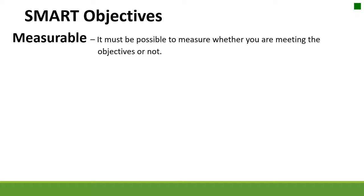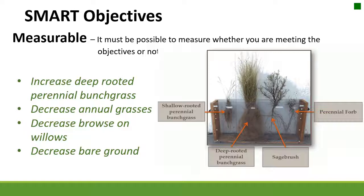M in SMART refers to measurable. We want to make sure our objectives are measurable and can help us understand whether we're moving in the right direction. When thinking about plants, we talk about them in functional groups. For example, deep-rooted perennial bunch grasses are great competitors with annual grasses — so an objective could be to increase deep-rooted perennial bunch grasses to decrease annual grasses. Another measurable objective could be to decrease browse on willows to maintain stream stability, or to decrease bare ground on a highly erodible site.